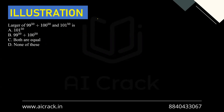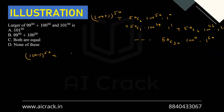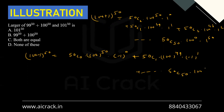Expanding (100+1)^50: 50C0·100^50 + 50C1·100^49·1 + 50C2·100^48·1² + ... + 50C50·1^50. Expanding (100-1)^50: 50C0·100^50 + 50C1·100^49·(-1) + 50C2·100^48·(-1)² + ... + 50C50·(-1)^50.